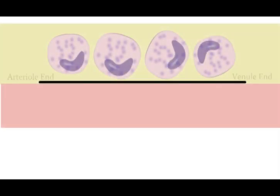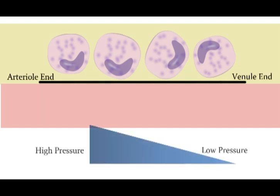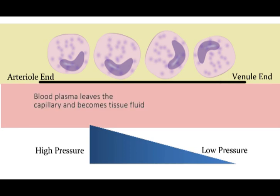The blood that reaches the capillaries from the arteries is under high pressure. This high pressure forces the blood plasma out of the capillary. The plasma that leaves becomes the tissue fluid surrounding the cells. This tissue fluid acts as a bridge in the movement of chemicals both into and out of the cells.